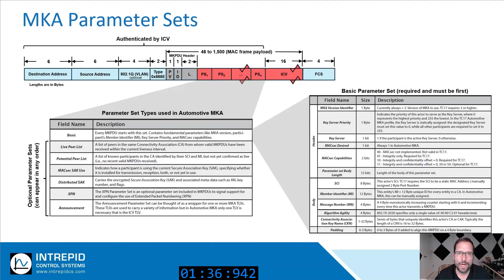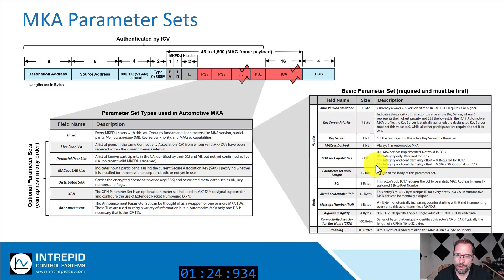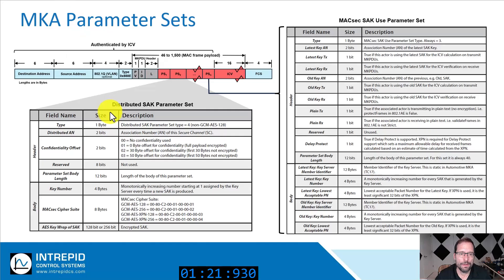Common parameter sets include the basic parameter set, which must be sent on a periodic interval by all participants. It contains information on whether the entity is a key server, capabilities about MACSEC, and other information needed by participants.